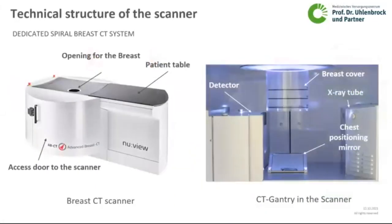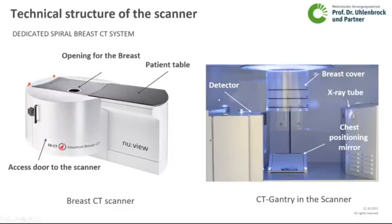Let me go into the technical structure of the scanner. You have a dedicated spiral breast CT system. Here is the opening for the breast and the patient table. Underneath it there is an access door to the scanner. If you open this, you have an inside view. On the bottom there is a chest positioning mirror. On the right side you have the x-ray tube, the breast cover with numbers indicating the length of the breast. And on the left side of this image, you have the detector.